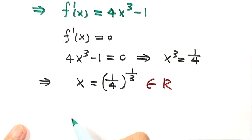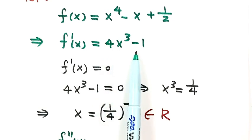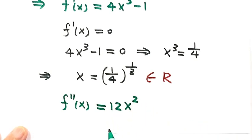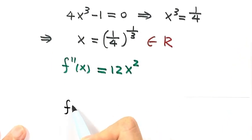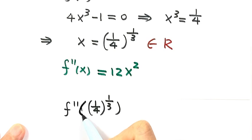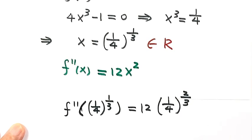Next, let's take a look at the second order derivative, which is 12x squared. This will help us determine if there's a local minimum, local maximum, or neither. Evaluating the second order derivative at the critical point x equals one fourth to the power of one over three gives 12 times one fourth to the power of two over three.